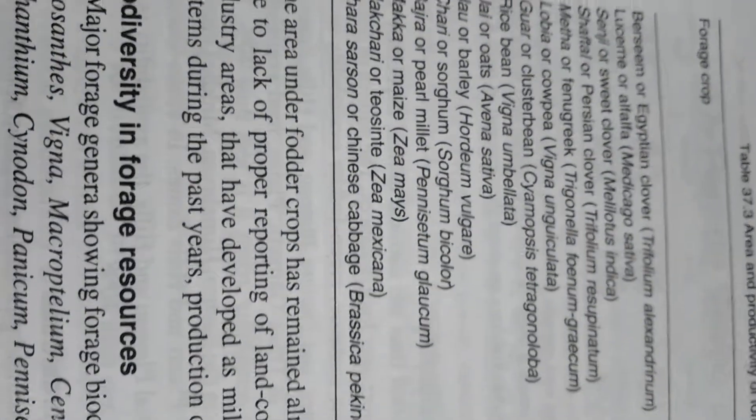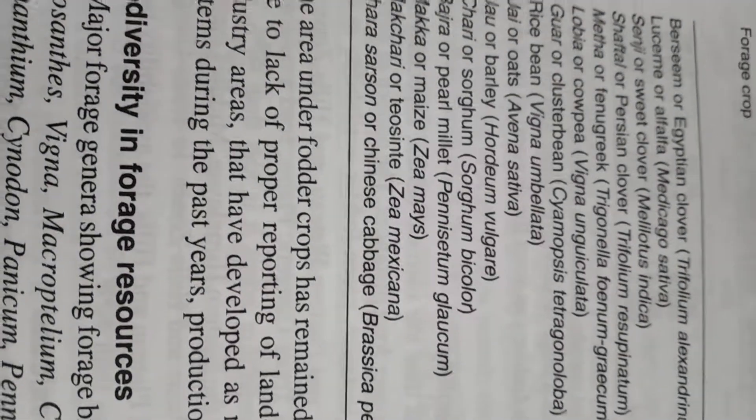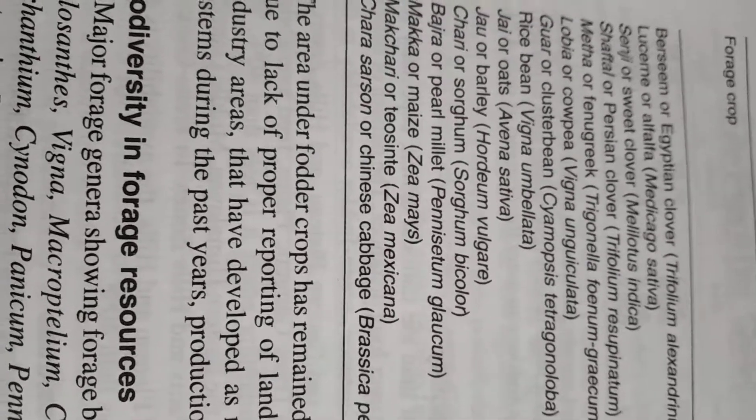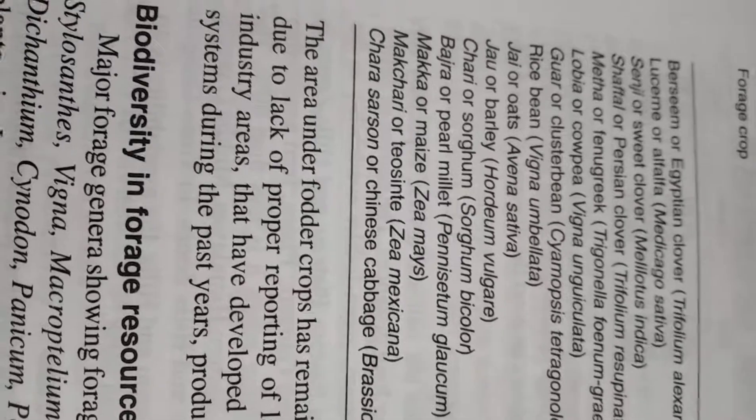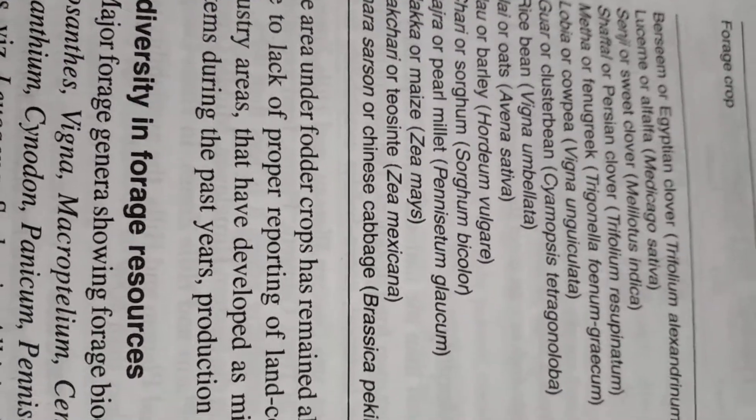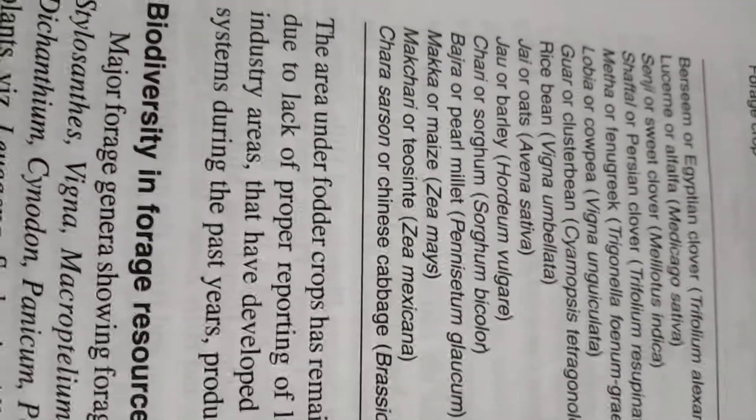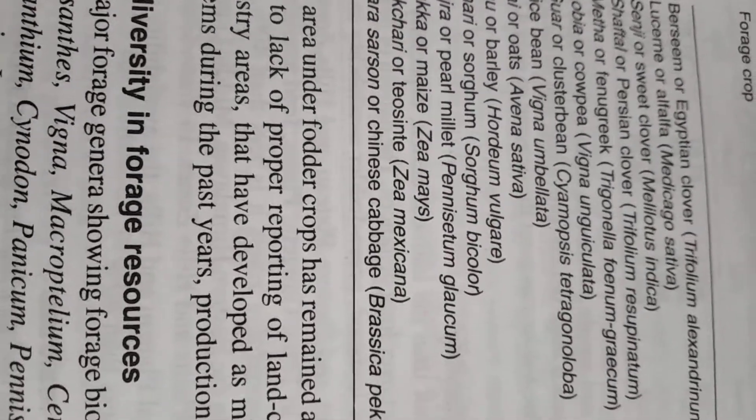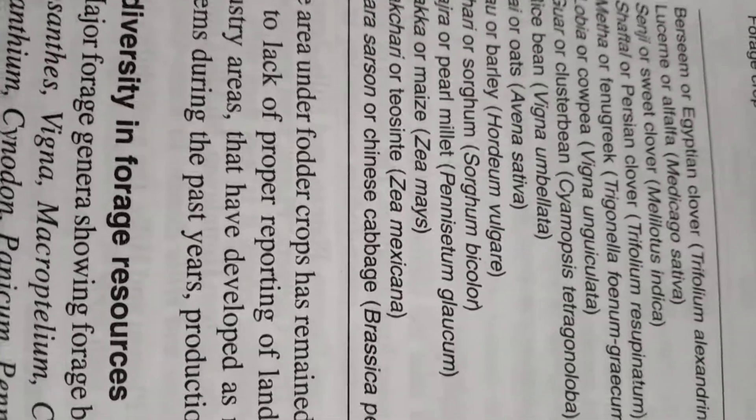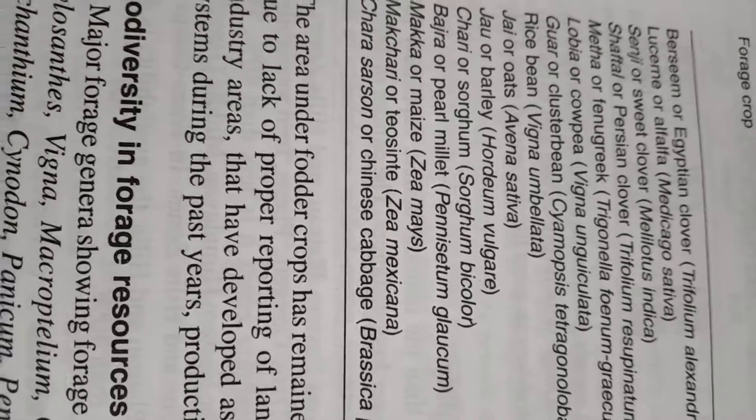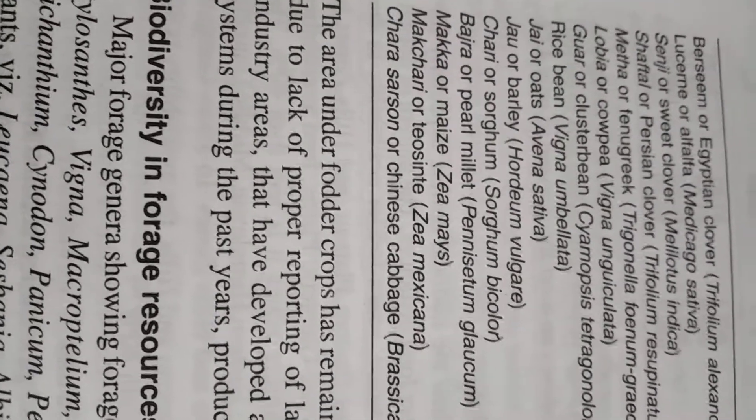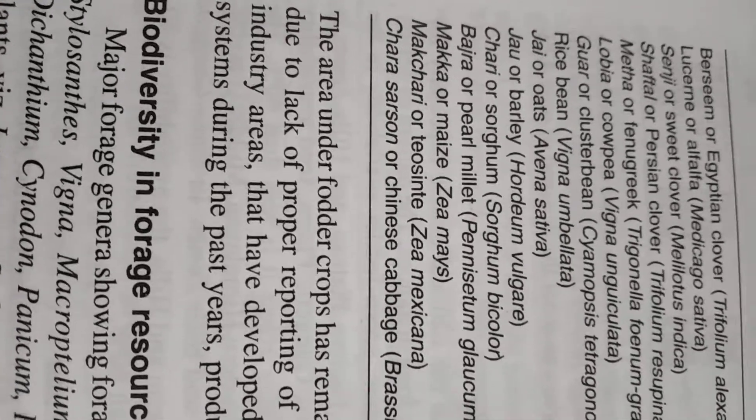Here are some important botanical names which you ought to remember. Like berseem, Egyptian clover, it is Trifolium alexandrinum. Lucerne or alfalfa is Medicago sativa. Sweet clover is senji, Melilotus indica. Then shaftal or Persian clover, Trifolium resupinatum which I gave in the option. This is methi or fenugreek, Trigonella foenum-graecum. Please remember it. Lobia or cowpea is Vigna unguiculata. Guar or cluster bean is Cyamopsis tetragonoloba from which you make guar gum. Rice bean is Vigna umbellata. Please remember it. This is important.